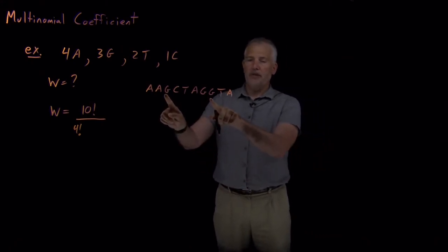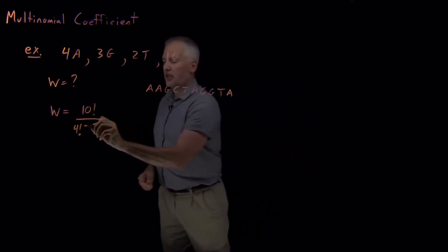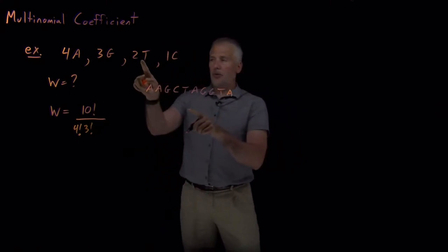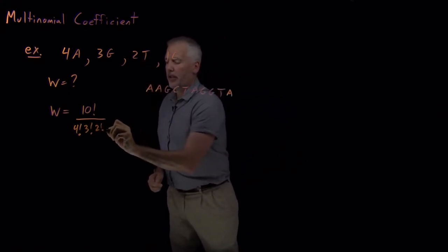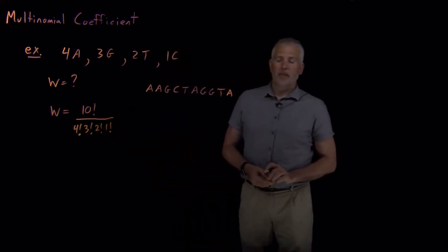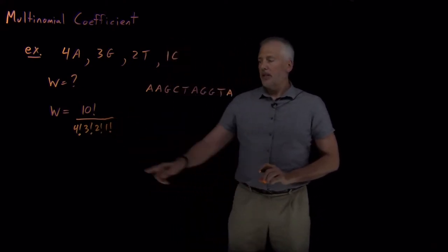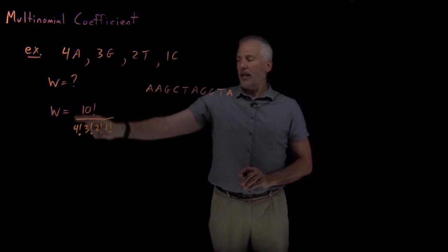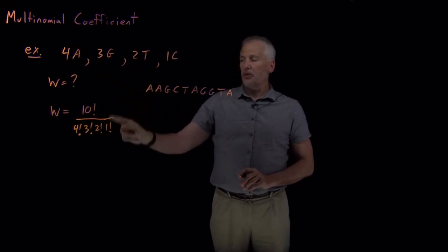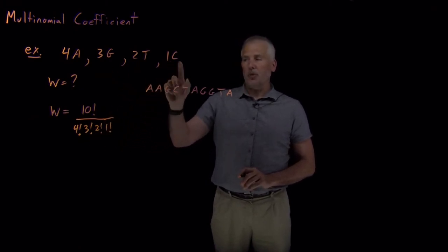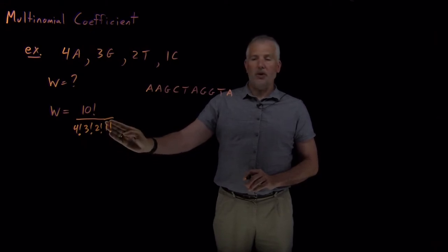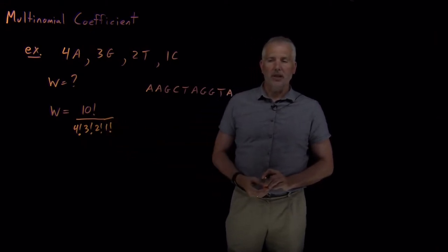I also have three different G's that are indistinguishable that I could shuffle around in 3 factorial ways, and I have two thymines that I can shuffle around and one cytosine. So these factorials in the denominator are correcting for the fact that the four A's are indistinguishable, the three G's are indistinguishable, the two T's are indistinguishable, and the one C is indistinguishable from itself. It doesn't matter whether you do or don't include a 1 factorial in the denominator.